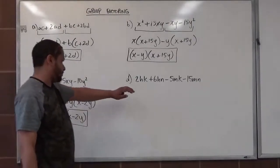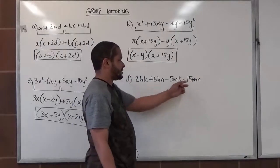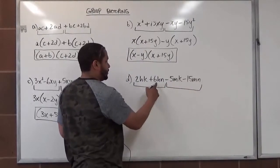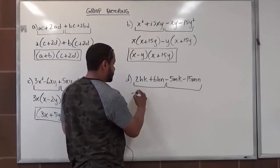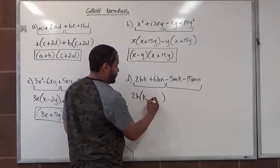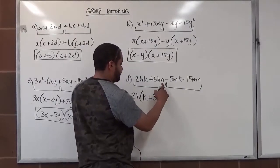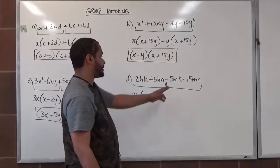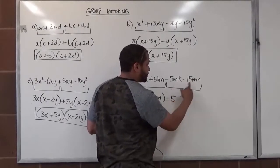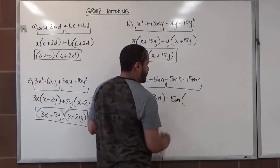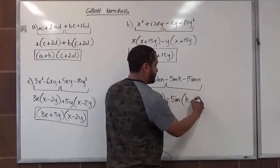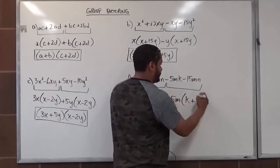Now let's move on to the most difficult problem. It has a lot of coefficients, a lot of variables, and a change of symbols. Looking at the first two terms: 2HK and 6HN have 2H in common, leaving K plus 3N. In the next set, the third term is negative, so we factor that out first. 5 and 15 have 5 in common, and both terms share M, so we factor out negative 5M. What's left over is K, and since we're pulling out the negative, the sign changes to positive, giving us K plus 3N. We see K plus 3N on both sides.